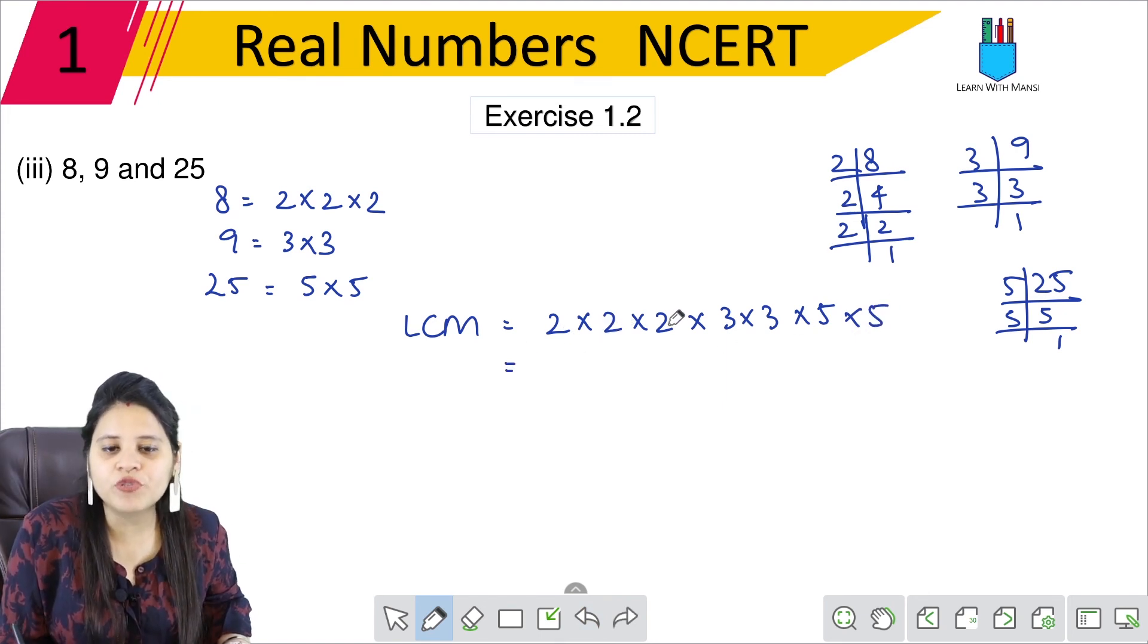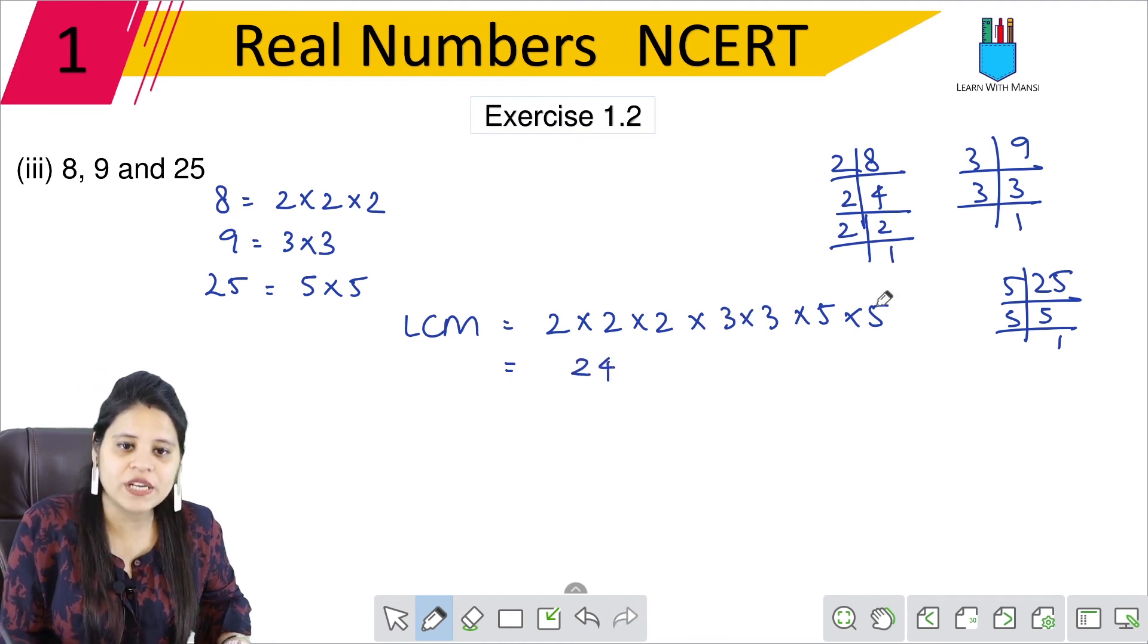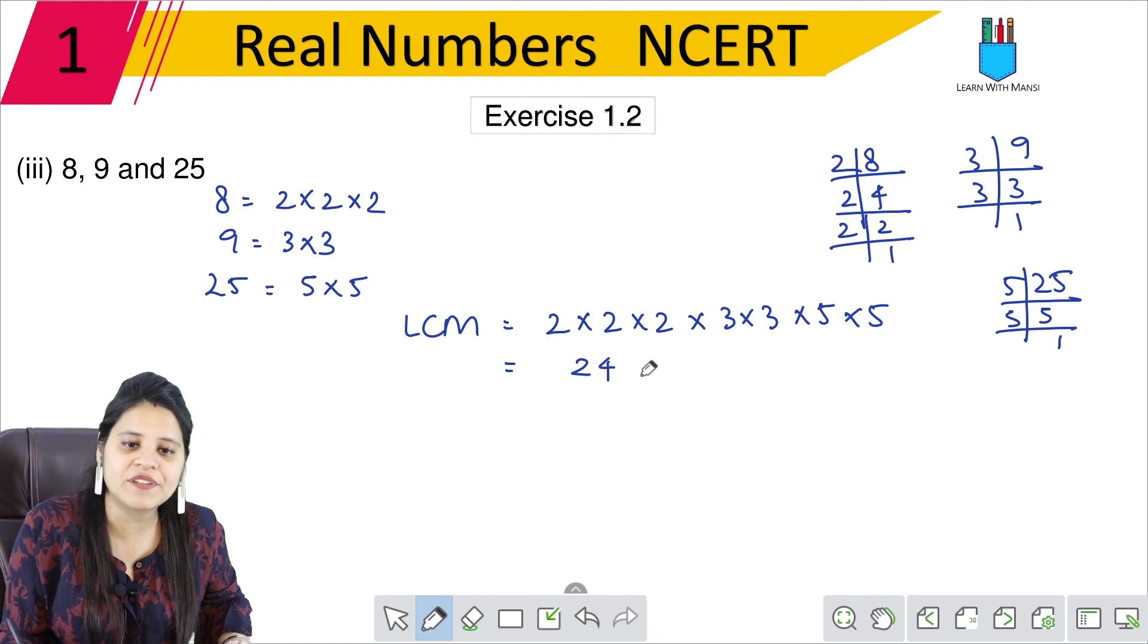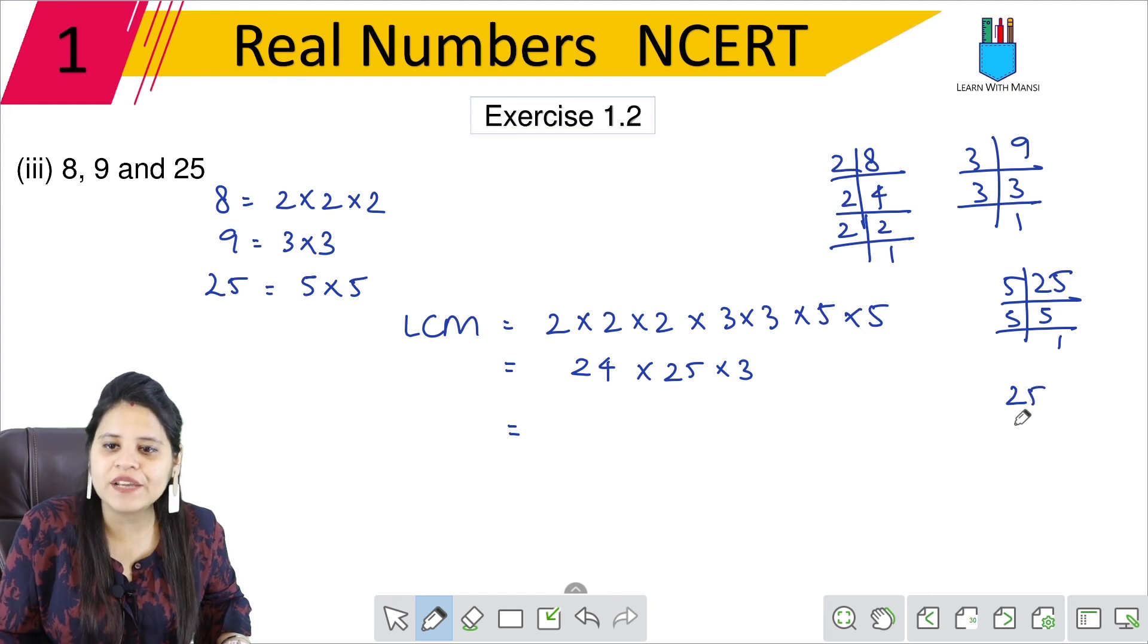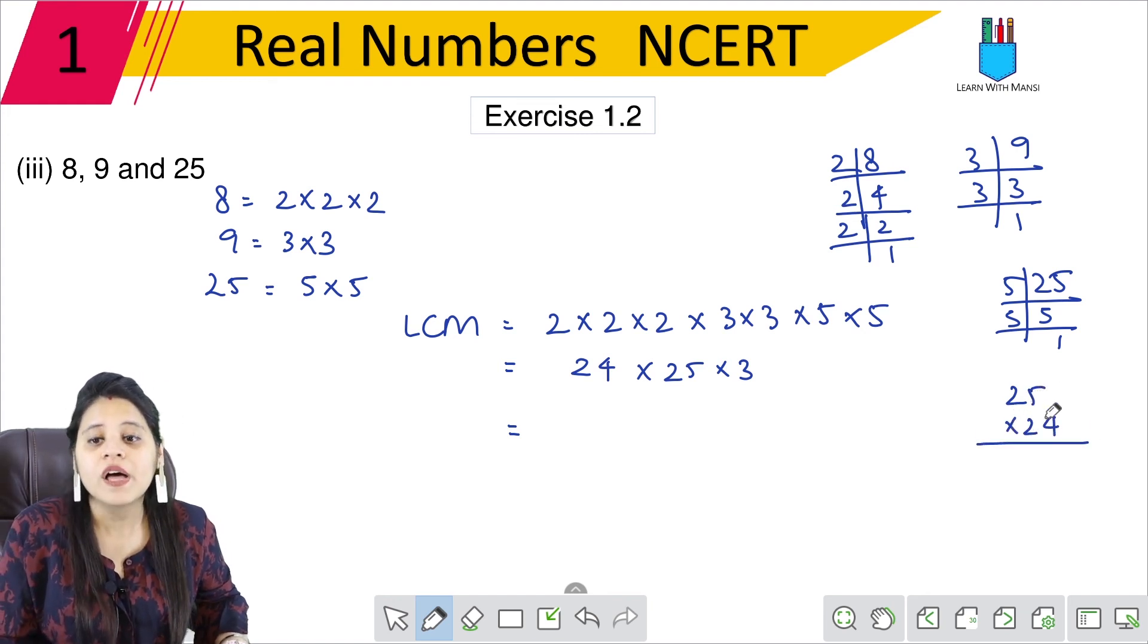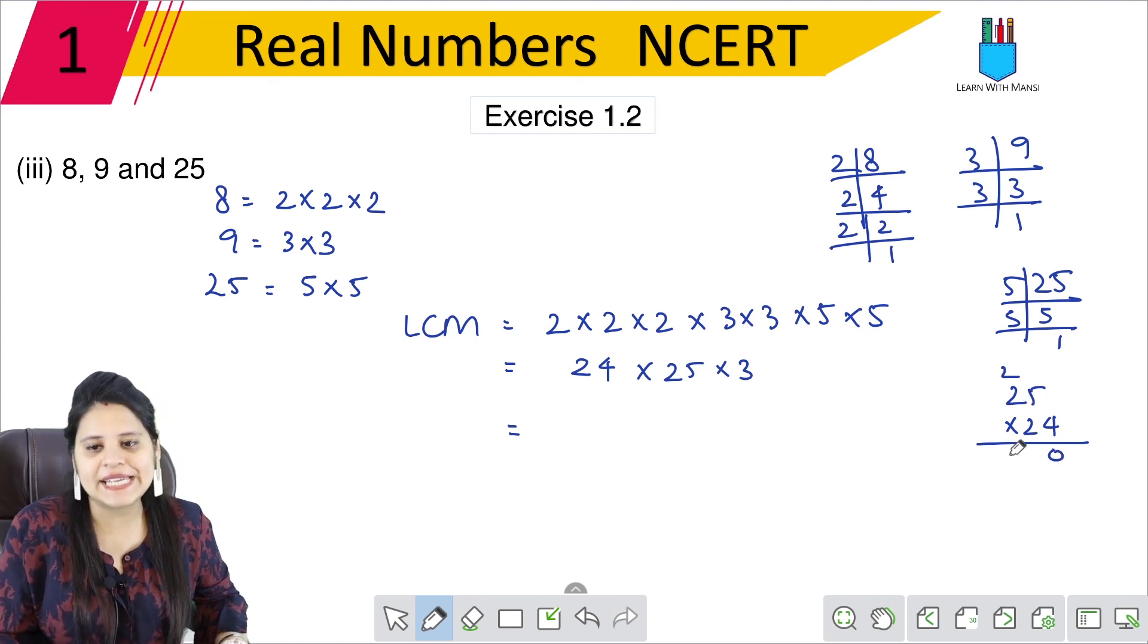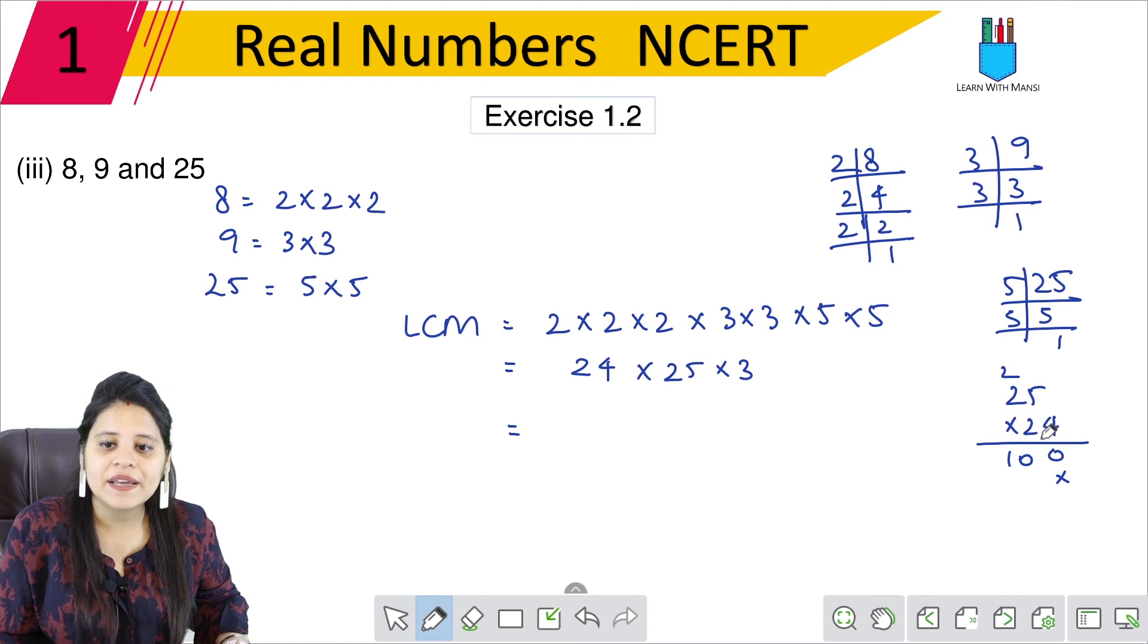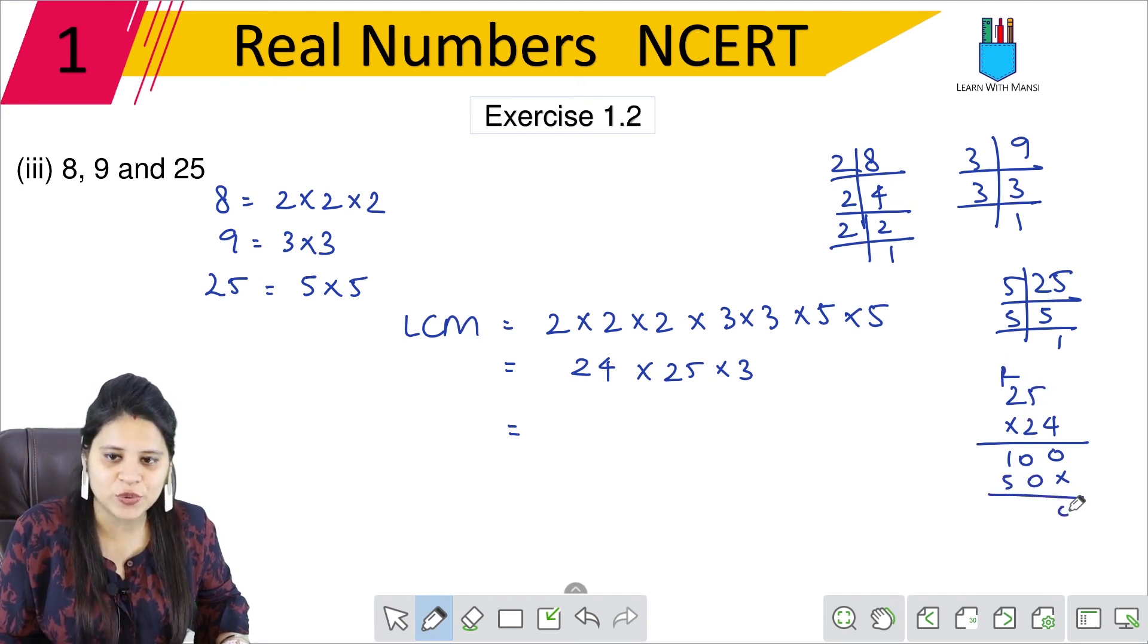So 2 × 2 is 4, 4 × 2 is 8. 8 × 3 is 24. 24 × 3... 5 × 5 is 25. We will do 25 × 24. 5 × 4 is 20, 5 × 2 is 10. So this is 600.